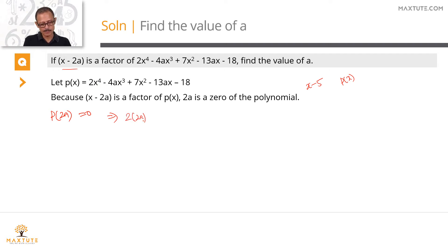So this is 2 times (2a)^4 minus 4a times (2a)^3 plus 7 times (2a)^2 minus 13a times 2a minus 18. By remainder theorem, we know if 2a is a zero of the polynomial, p(2a) is equal to 0. This is p(2a), so this should be equated to 0.